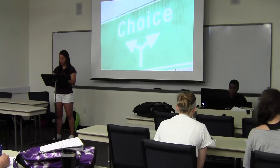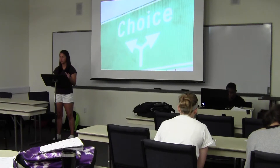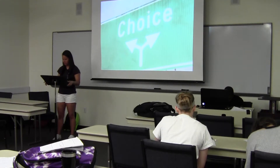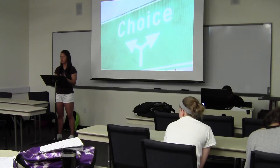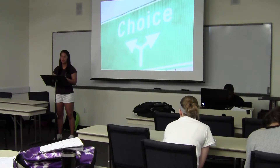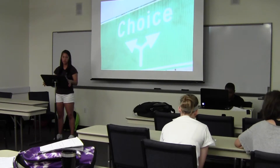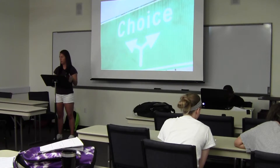Number three: Glasser says all we can do is behave, and behaving is made up of acting, feeling, and thinking. All we can really control is how we act, what we think, and how we feel — the rest we can't control. Fourth, he thinks the main long-lasting psychological problems are relationship problems. Relationship problems can cause other problems like being sick or feeling tired, so it's important we have good relationships. We also choose how we deal with a bad relationship — we can choose to be miserable or choose to learn from it.